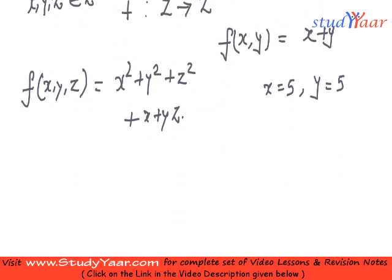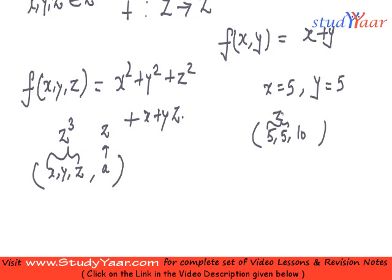And my relation is going to be something like this. x, y, z, comma, what is the equivalent of this? I am just going to call it as a. So, this is what? This is your Z cube, because this in itself is an ordered pair from Z cube. And this is from Z. So, this thing, how I can write? I can write it like this. 5, 5, 10. This is Z square and this is from Z.